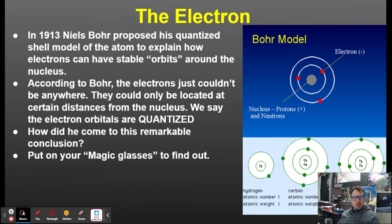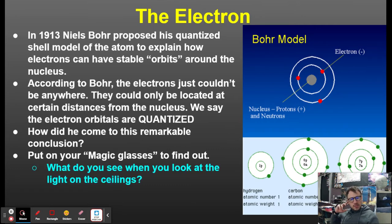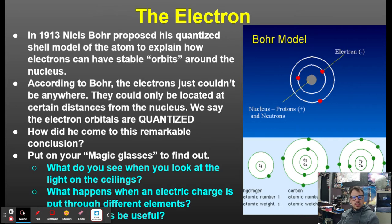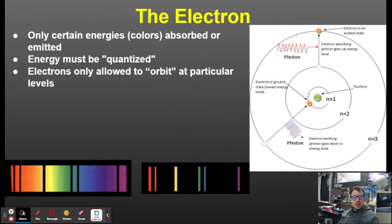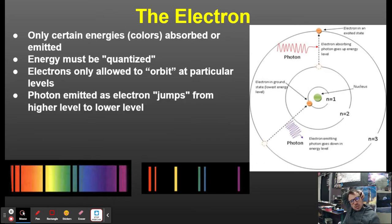You can demonstrate this with an experiment. If you look at a neon light through prism glasses, you can actually see color bands — only certain energies or colors are absorbed or emitted. This is what we call energies being quantized. Electrons are only allowed to orbit at particular levels, and photons are emitted as electrons jump from a higher to a lower level.